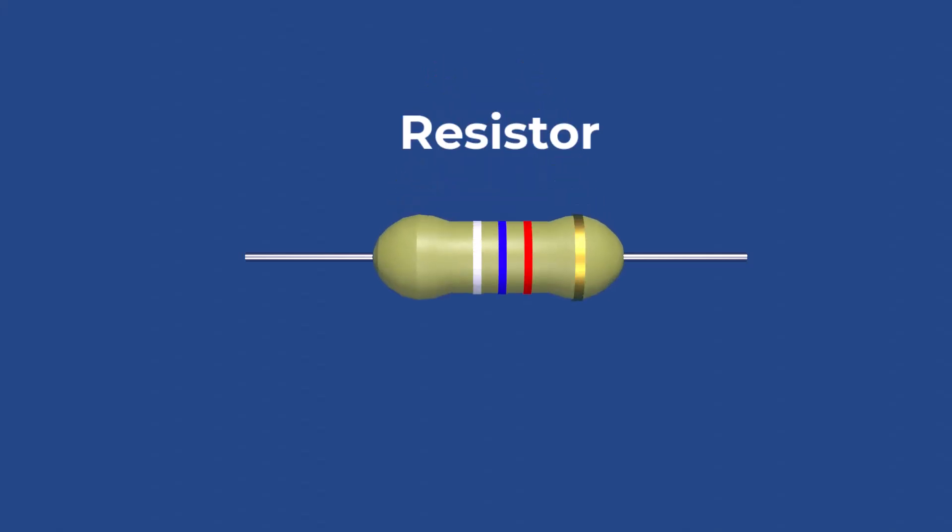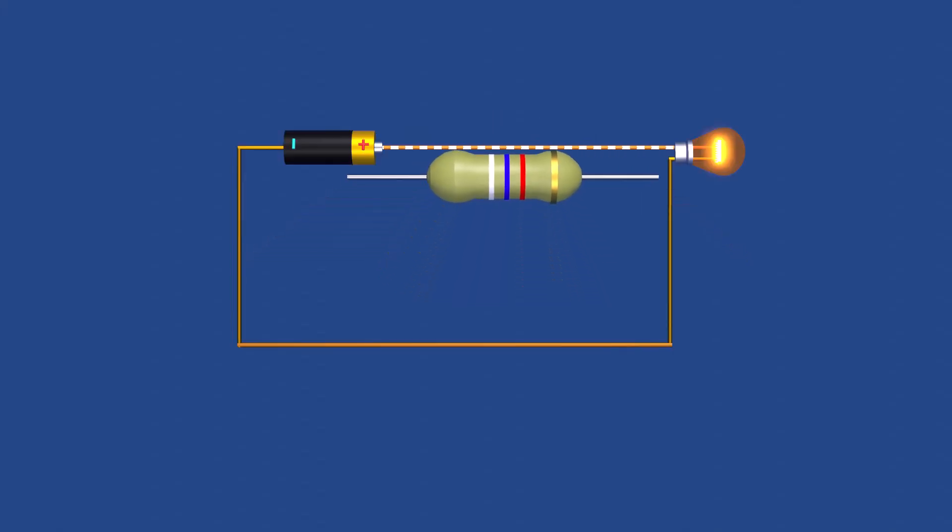Resistors are passive components in electrical circuits, designed to oppose the flow of electric current. Their main functions include controlling and limiting electric current, creating voltage drops, and converting electrical energy into heat.